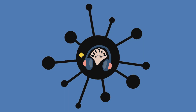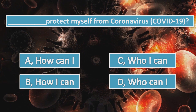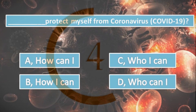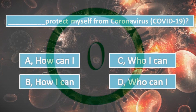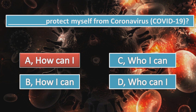How can I protect myself from coronavirus, COVID-19? Here we are looking for the first part of the sentence. Which one is the correct answer? How can I protect myself? Be careful with C and D because WHO is pronounced like 'who' and not 'how'.